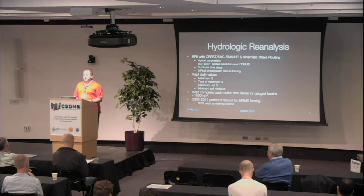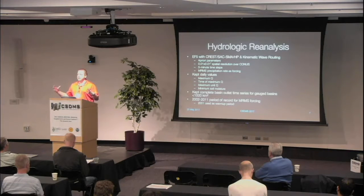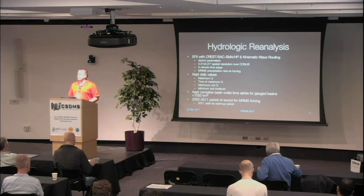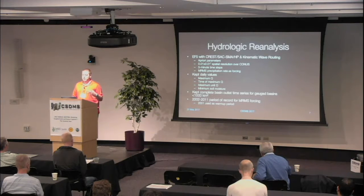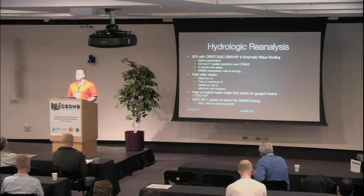With EF5 we've also done a hydrologic reanalysis. Using the MRMS precipitation, we derived a reanalysis covering 2001 through 2011 — the period with single-pole radar, making the dataset very homogeneous. We ran five-minute data through the model and kept just four output values: the maximum streamflow, the time of maximum streamflow, maximum streamflow normalized by drainage area, and the minimum soil moisture. The idea was to use these values to develop climatologies of where flash flooding was happening and to evaluate how the model was performing.